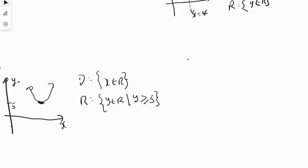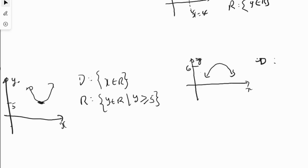If the parabola has only a maximum — let's say the maximum is 6 — the domain for any parabola opening up or down is always x belongs to R. The range depends on whether there is a maximum or minimum. In this case with a maximum of 6, range will be y belongs to R such that y is less than or equal to 6.